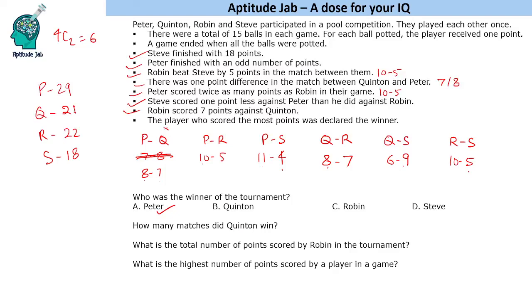How many matches did Quinton win? Looking at Quinton's results: he lost to Peter, won against Steve, and lost to Robin — so Quinton won only one match. What is the total number of points scored by Robin? Robin scored 5 against Steve, 7 against Quinton, and 10 against Peter — a total of 22 points.